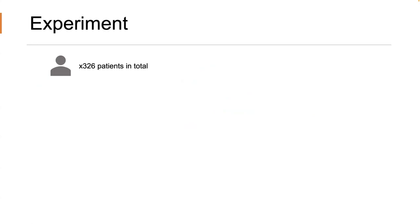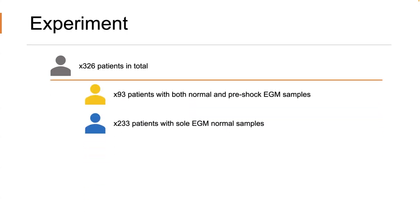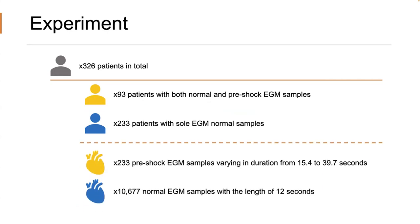In this study, we gathered EGM readings from 326 patients, all of whom have installed ICD devices. From this group, 93 patients provided EGM readings that show both normal and pre-shock conditions. The rest, around 200 patients, only have normal EGM readings. In total, we have more than 10,000 normal EGM readings, while we only have about 233 pre-shock readings. This dataset shows considerable disparity between the normal and pre-shock conditions.